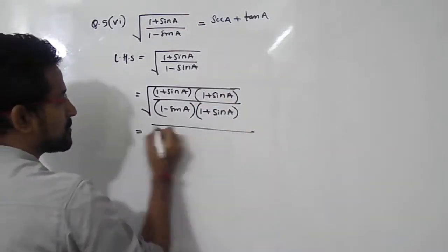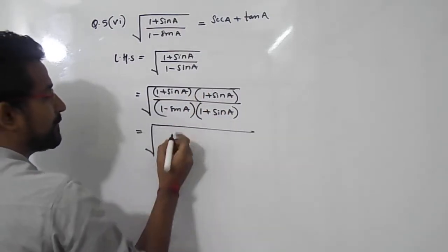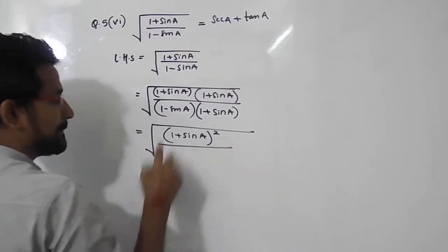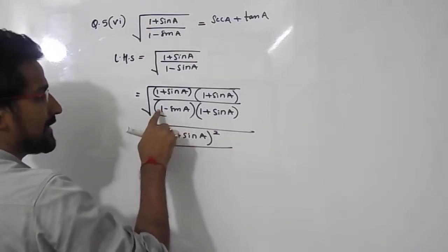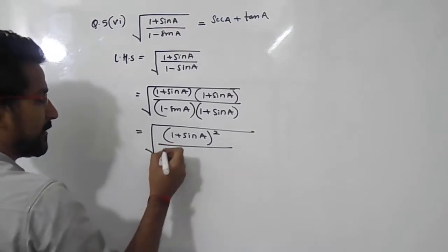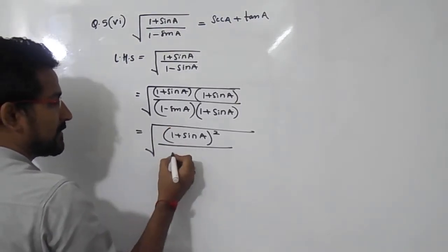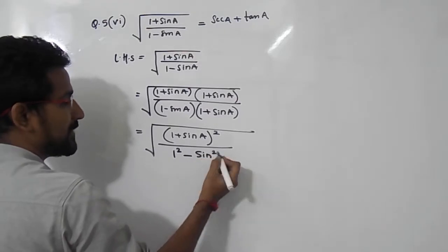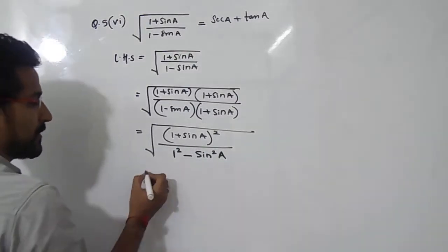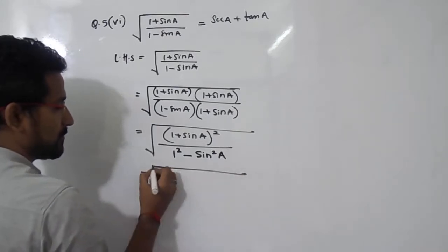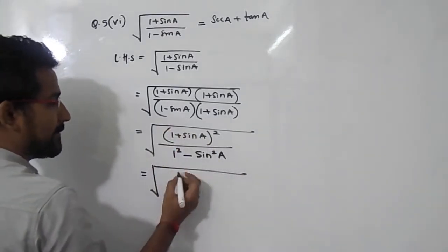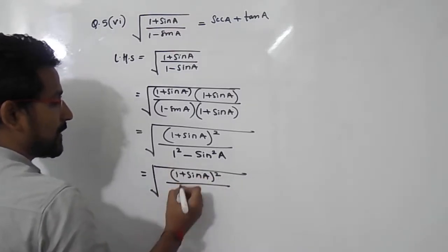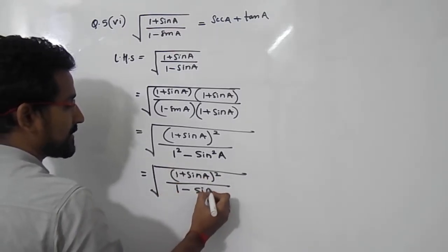Now, (1 plus sin A) times (1 plus sin A) is nothing but (1 plus sin A) whole squared, divided by (A plus B)(A minus B) — it is in the format of that identity. So it is nothing but A squared, that is 1 squared, minus B squared, that is sin squared A. So this is the perfect square value, so I will keep it as is: (1 plus sin A) whole squared divided by (1 squared minus sin squared A), which is (1 minus sin squared A).